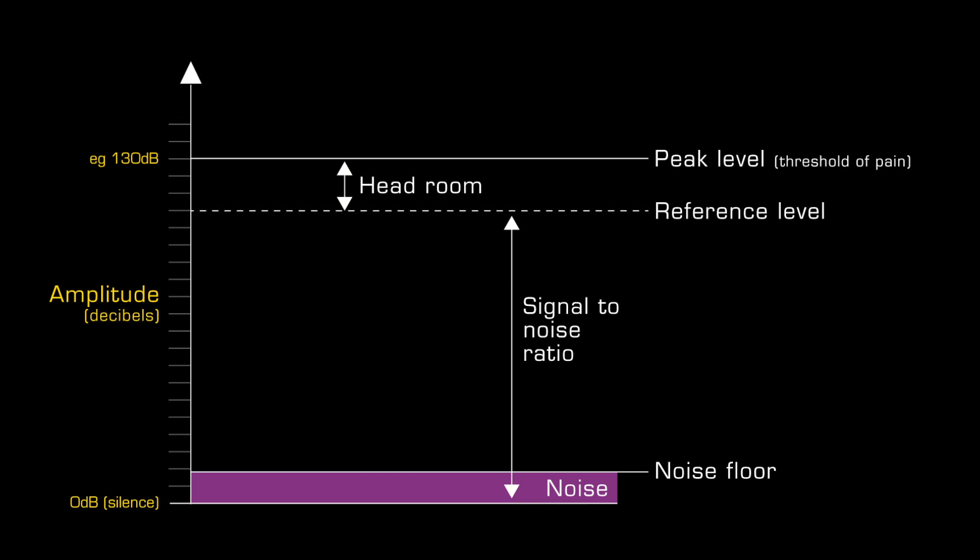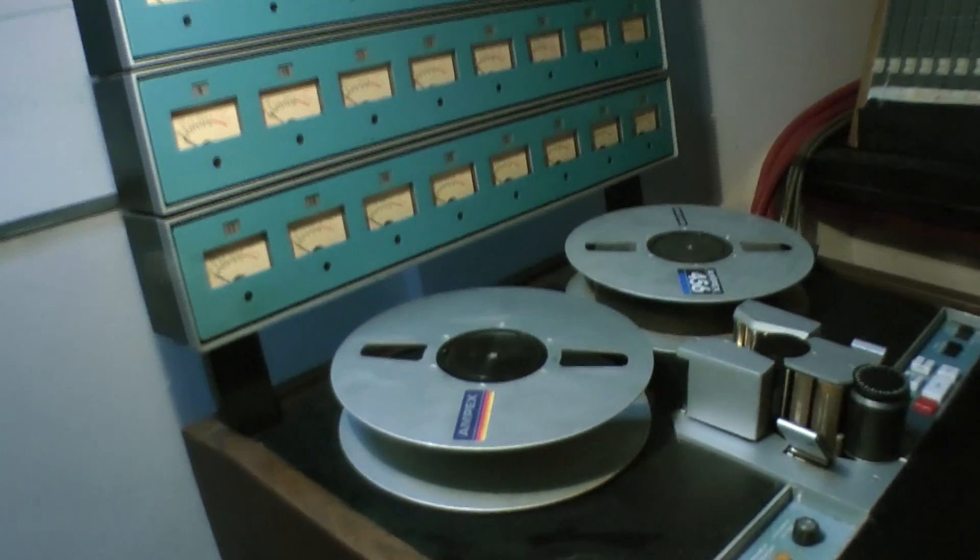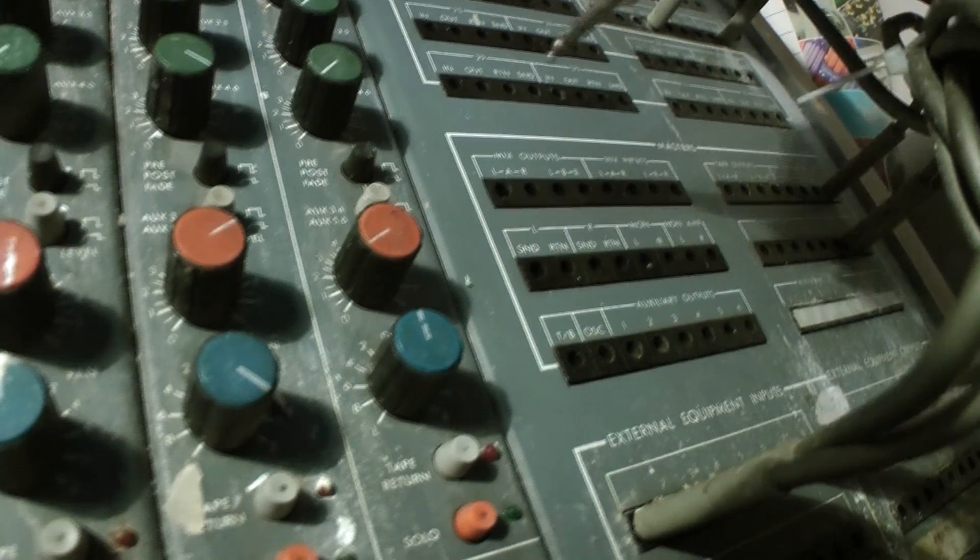Between the reference level and peak level is a region known as headroom. This region represents a safety margin where momentary peaks above the average reference level can be accommodated. This element of the diagram is commonly included in diagrams that represent dynamic range in analog systems such as tape recorders and mixing desks.